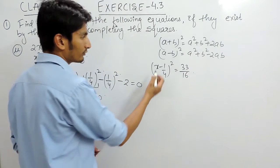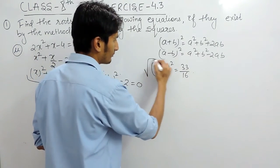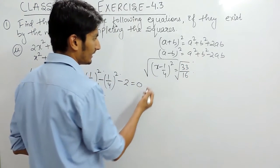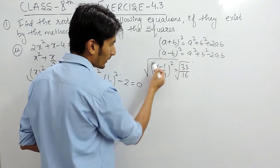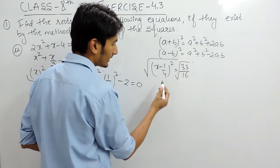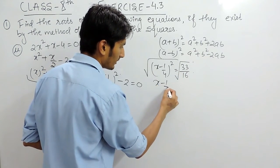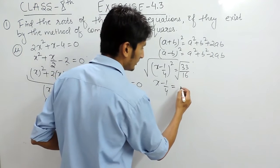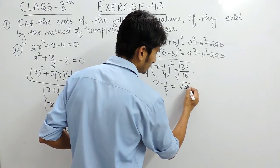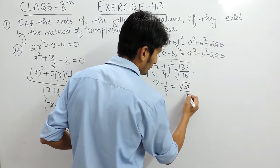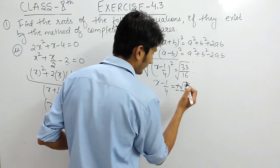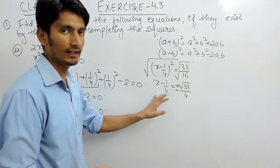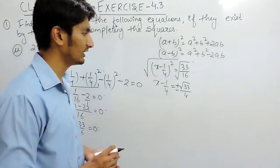Now we have to remove the square, so we take the square root of both sides. The square root and square cancel, giving x + 1/4 on the left side, and root 33 upon 4 on the right side. The value can be positive or negative, as I have already explained in the previous video.